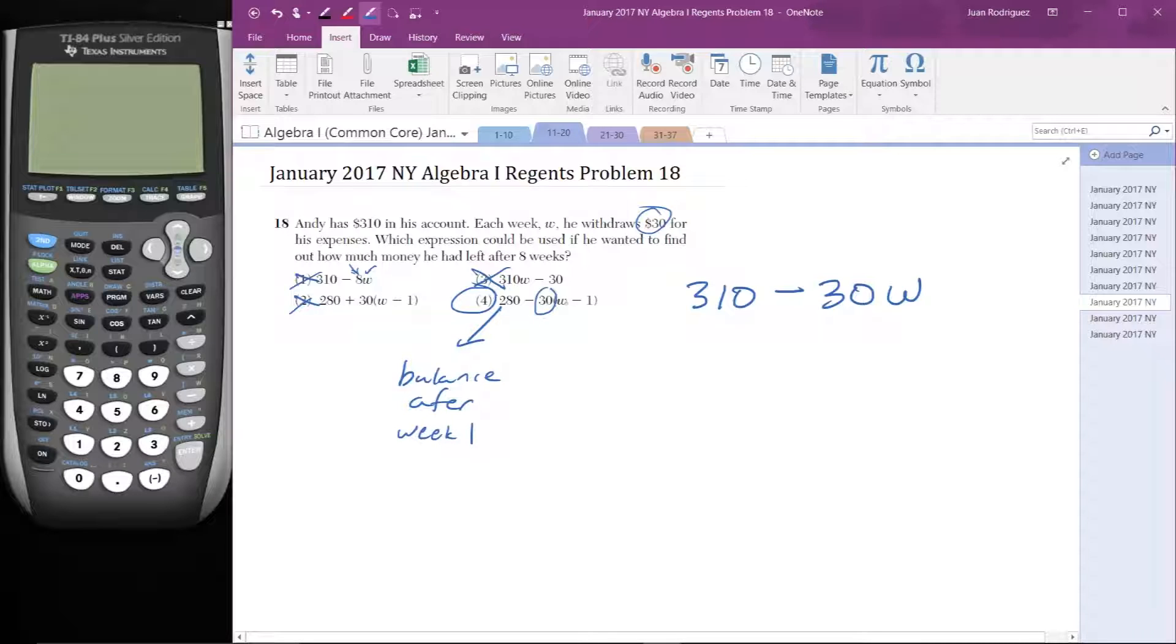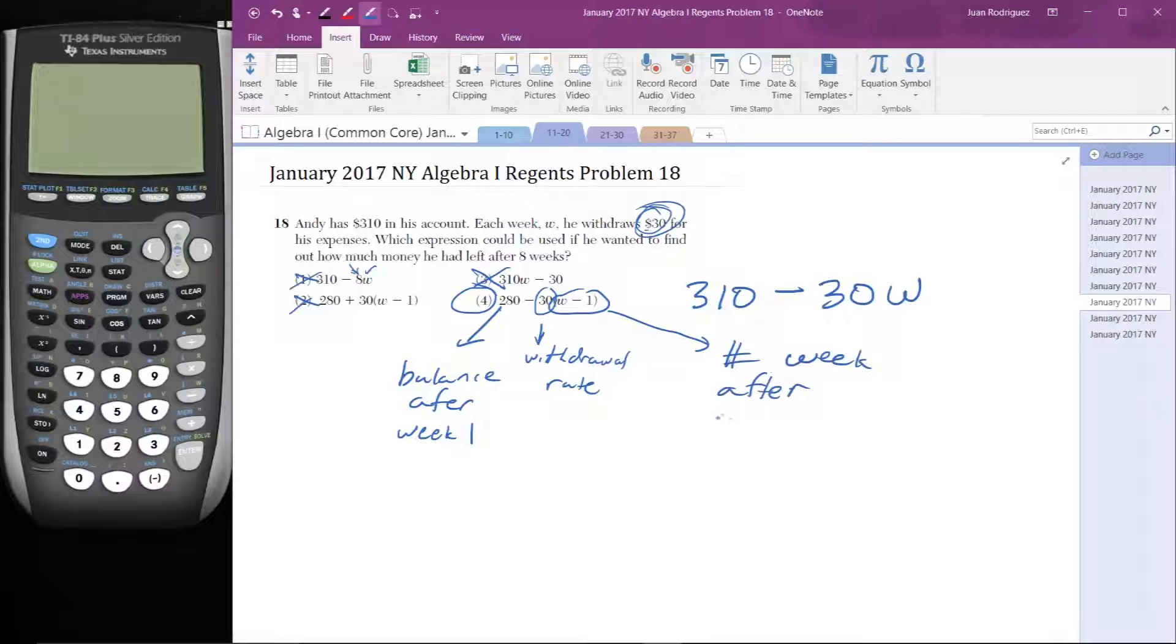And then this is the withdrawal rate. This 30 being multiplied by a variable, so it has to be a withdrawal rate or rate of change. And in fact, he's withdrawing 30, so that does match. So this is the withdrawal rate. And then what is this W minus 1 instead of W? W minus 1 is the number of weeks after week one. So this matches the number of weeks after week one times 30, which is the total withdrawals after week one. And 280 is the balance after week one. So that works.